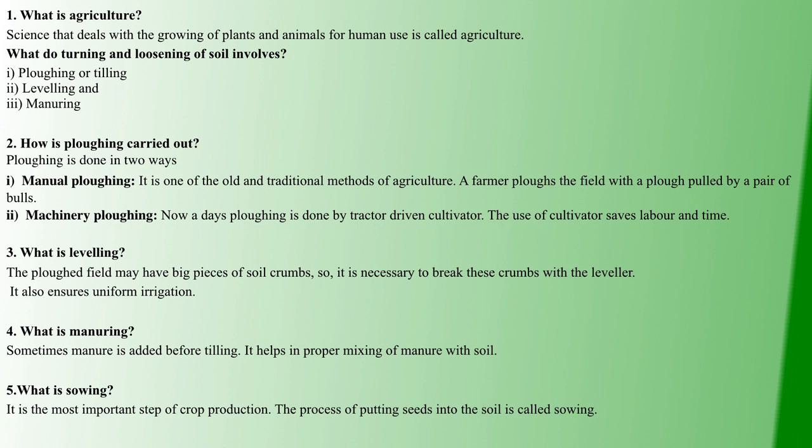Third question: What is Leveling? After Plowing, at the level of soil crumbs, there are different pieces of soil crumbs. Leveling makes the soil uniform so that irrigation is uniform. So we do Leveling.